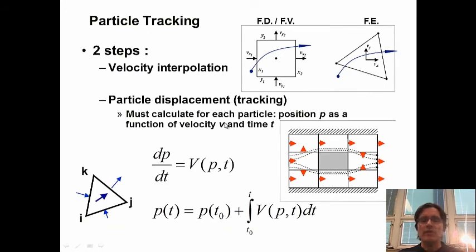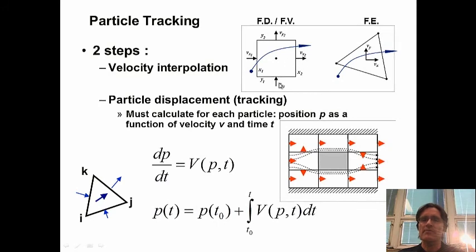I'll finish this first part by introducing one concept: what we can do with the velocities once calculated. The most simple application is particle tracking, which can be considered either a flow or transport component. In particle tracking we're interested in the track of a particle — either a particle of water or a non-reactive contaminant — through our velocity field. There are two steps: first, velocity interpolation. We've calculated velocities at the interfaces of our finite difference block cells, but our particle could be anywhere, so we need to interpolate these velocities anywhere within the domain. The finite element approach is similar — one velocity per element, interpolated as needed.